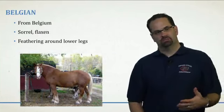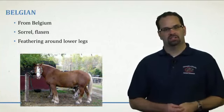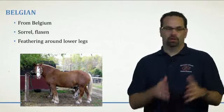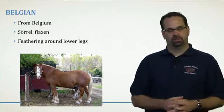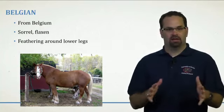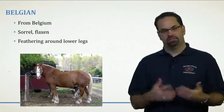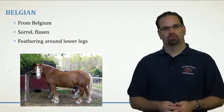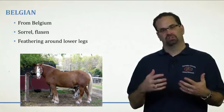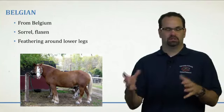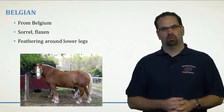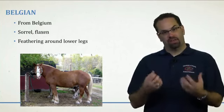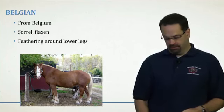The next one is pretty popular here in the United States — it's called the Belgian, from Belgium. They're really known for having a specific coat color — sorrel and flaxen — terms we'll cover more in next week's lecture on coat colors. They also have a lot of feathering around their lower leg.